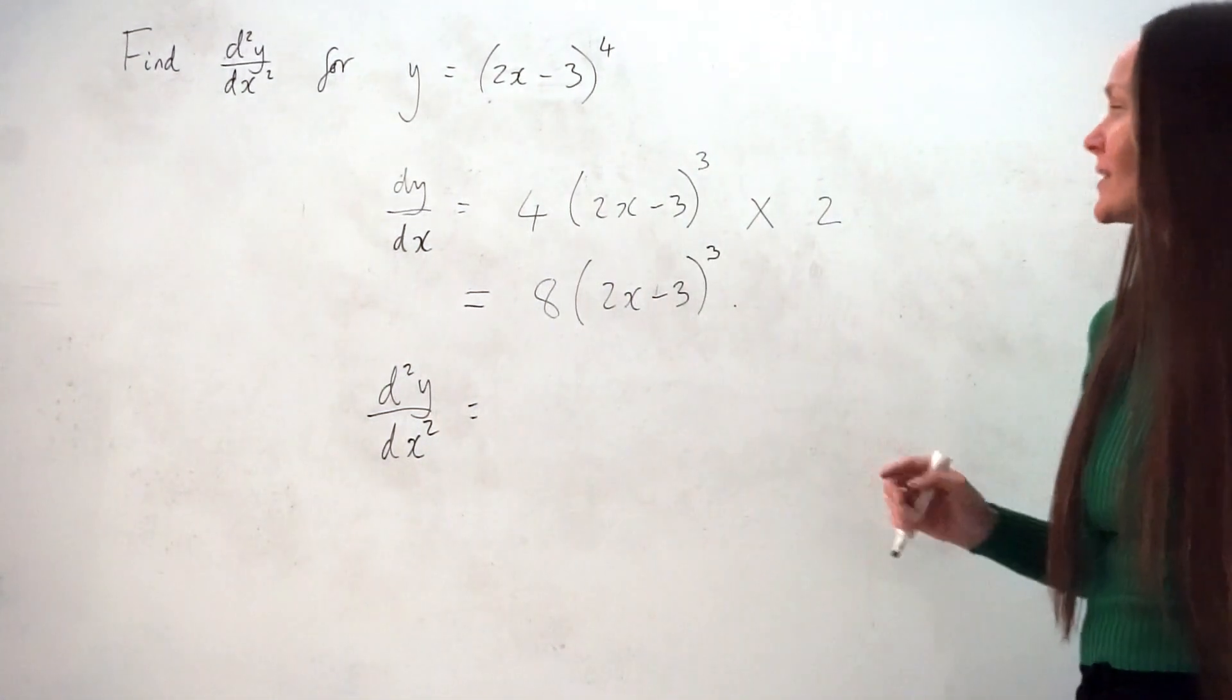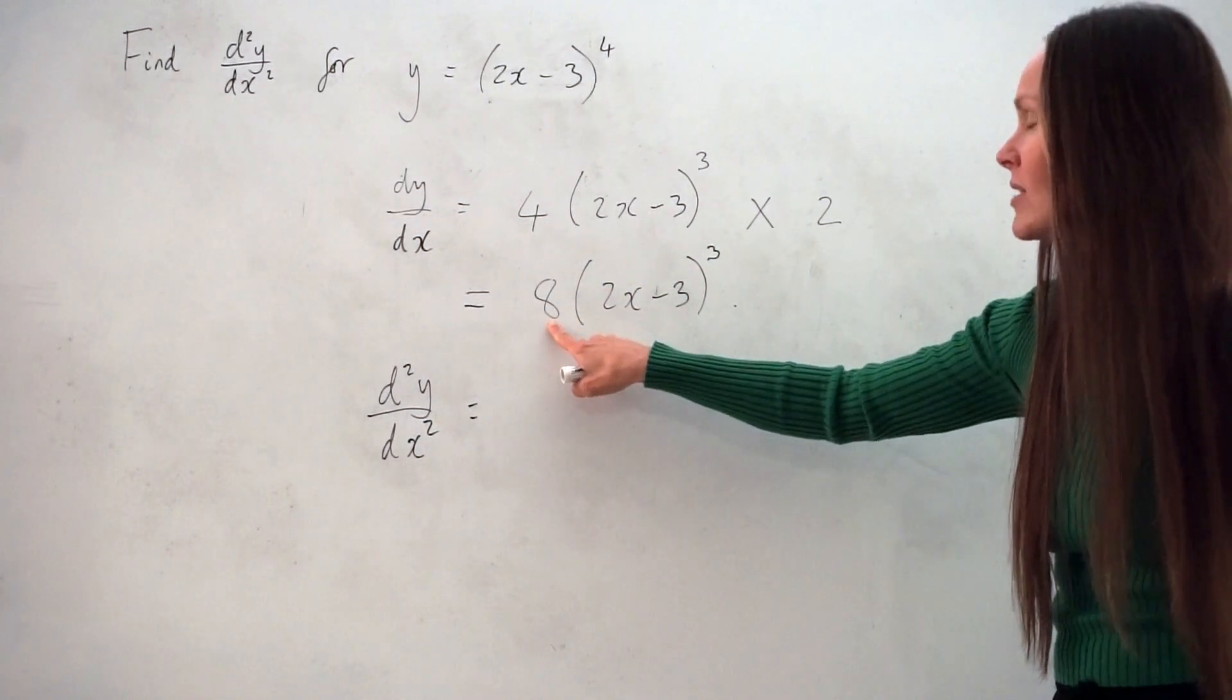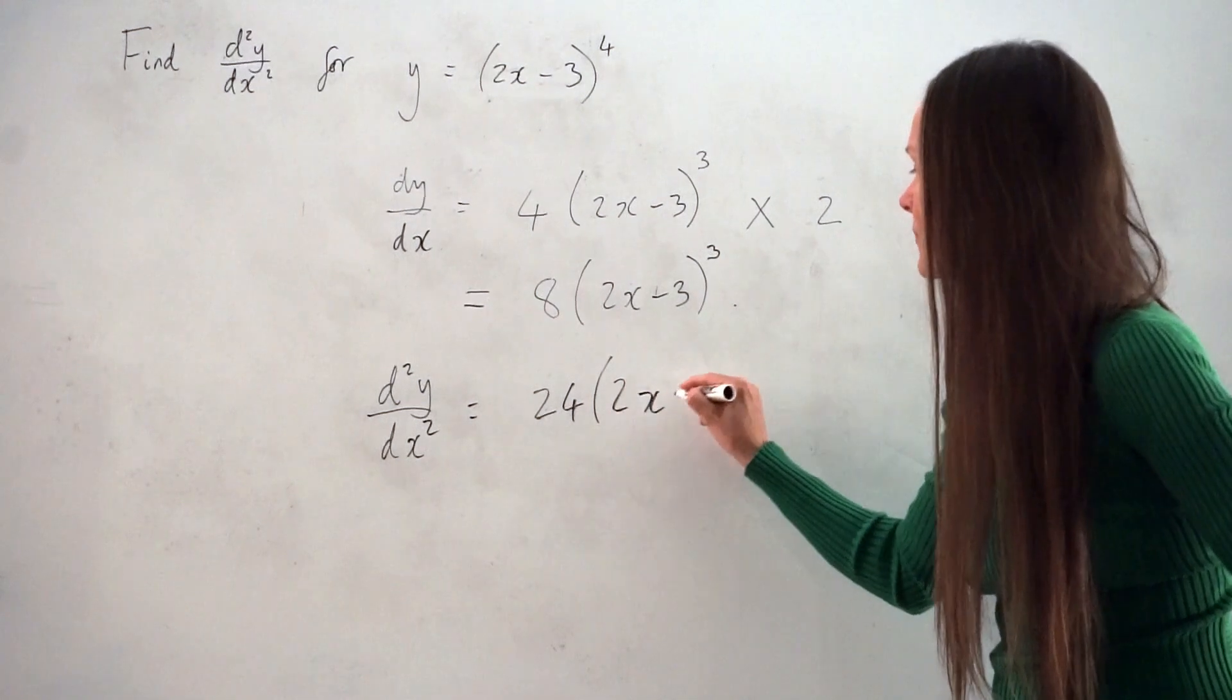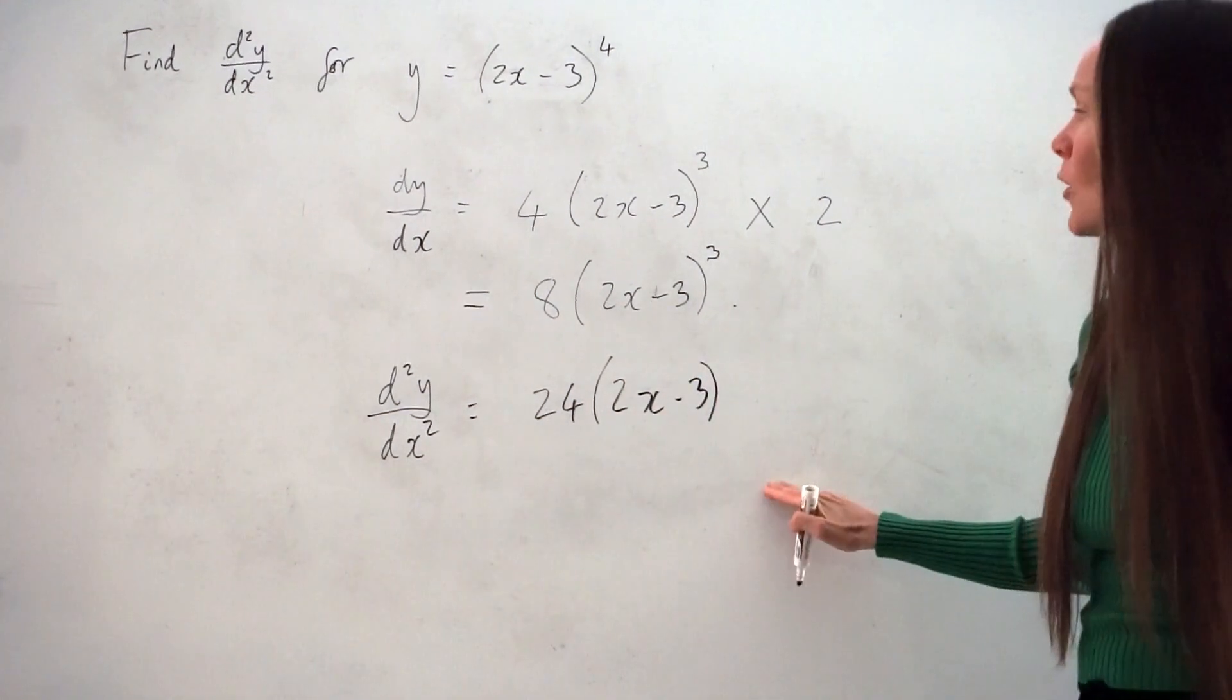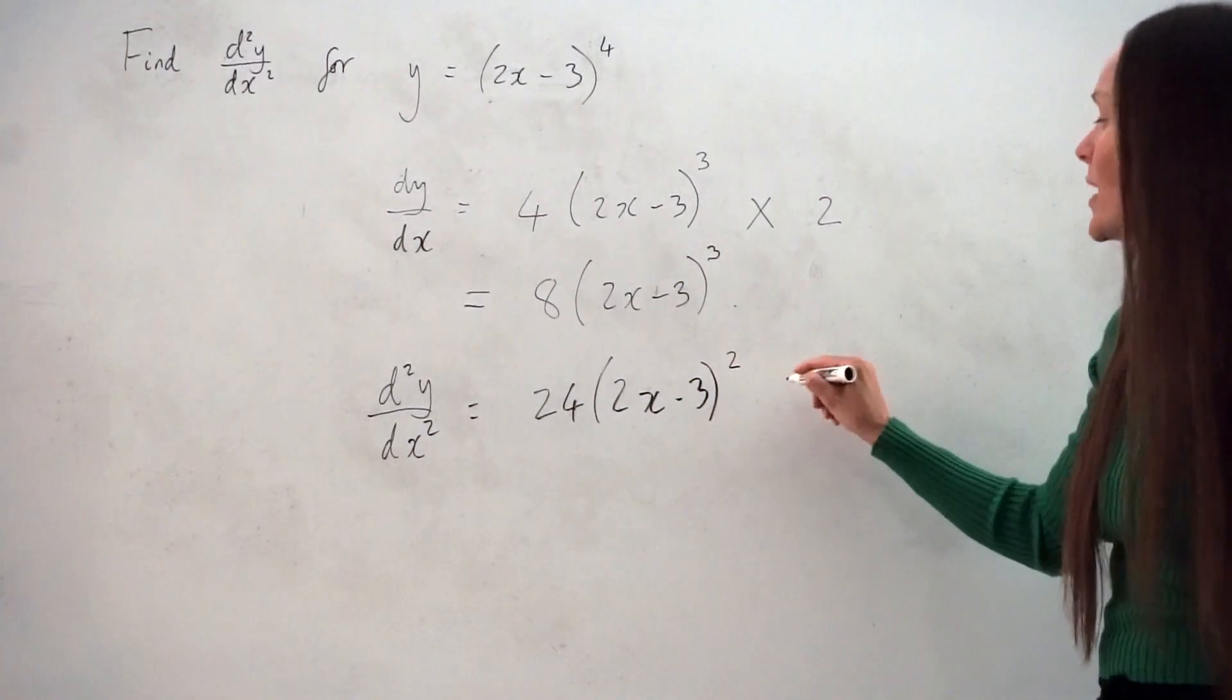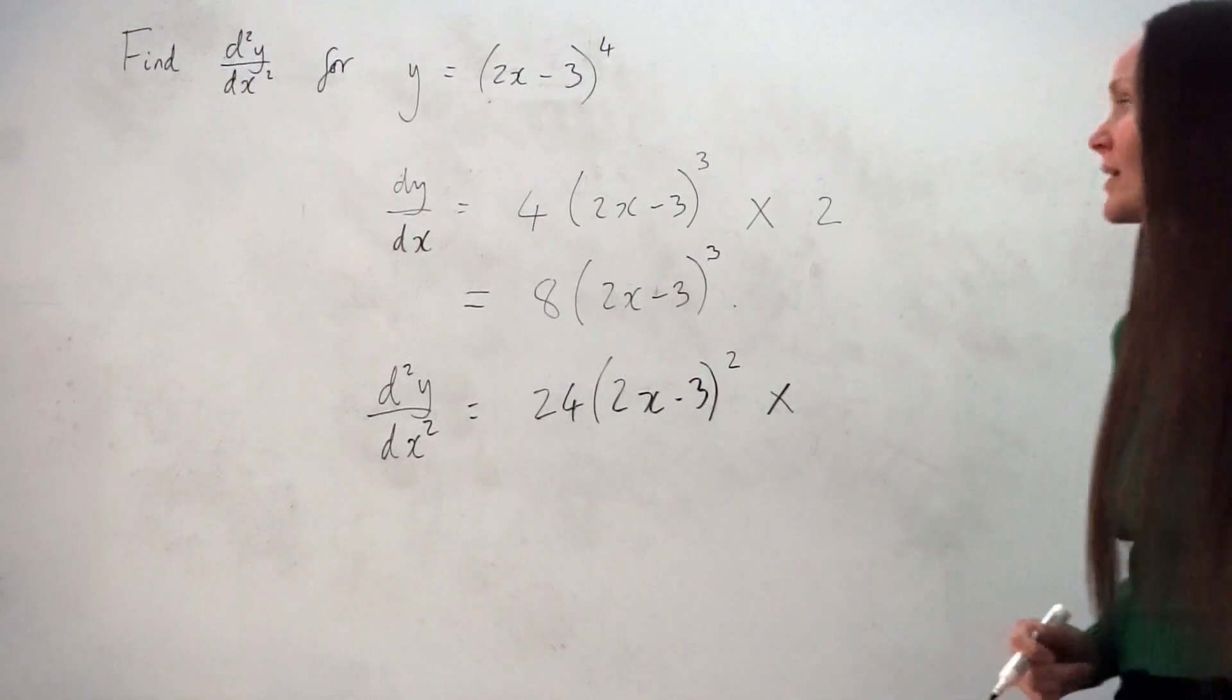So I take the power on the brackets, 3. I multiply it by this number here, so 24. The brackets always stay the same. The power on the brackets reduces by 1, so I'm left with squared. And then I have to multiply by the derivative of what's inside the brackets, which we already know because we did it earlier.